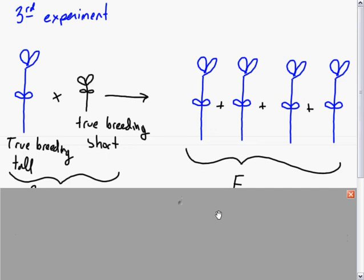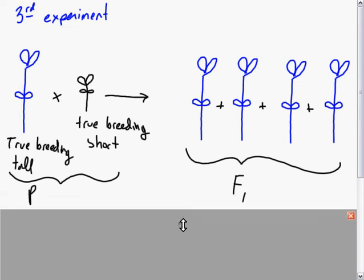In his third experiment, he took a true breeding tall and a true breeding short. All of the offspring turned out to be tall.